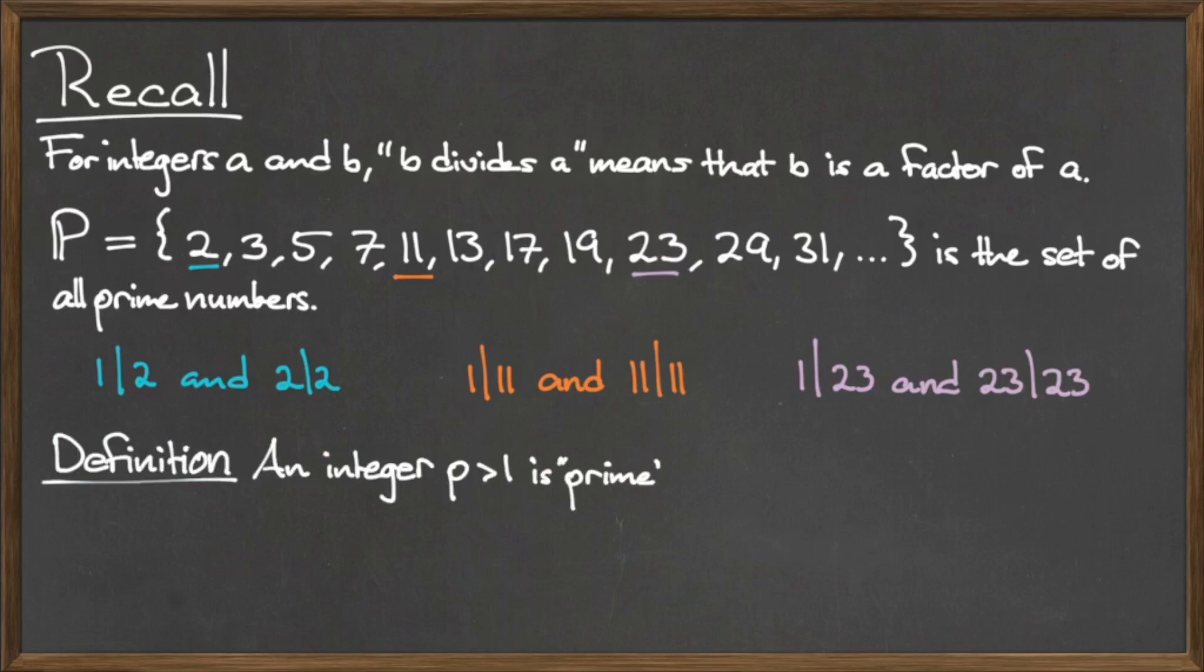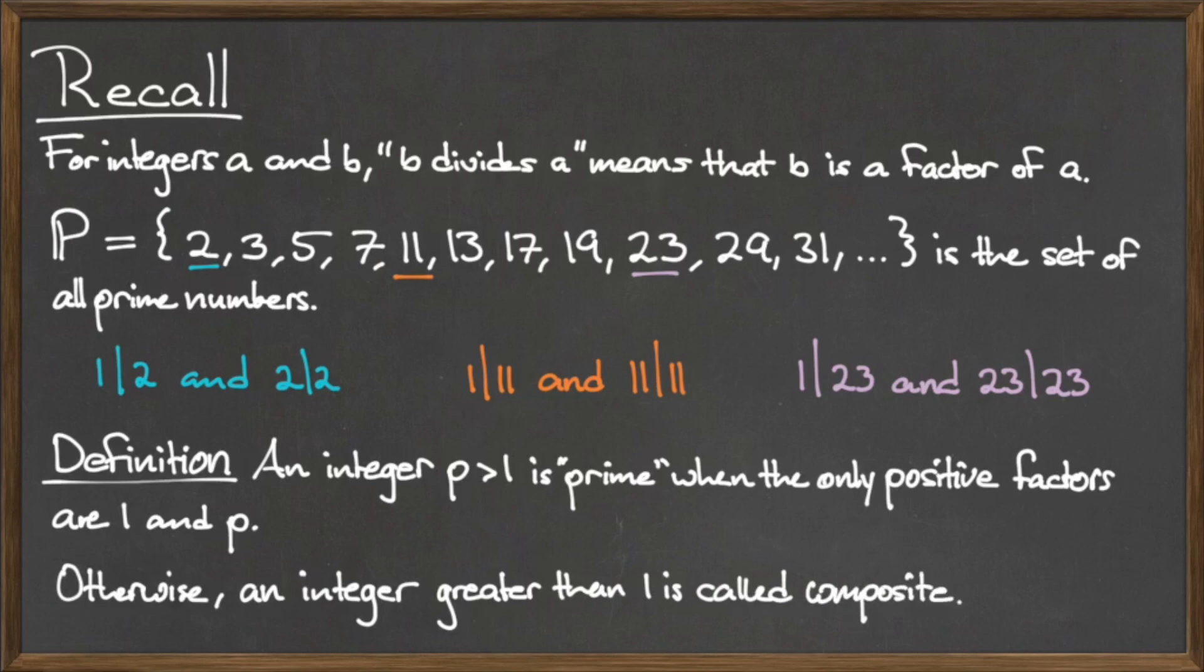Using these three numbers as an example, hopefully you can see the characteristic that all of these numbers share, and we can now formally define a prime number.